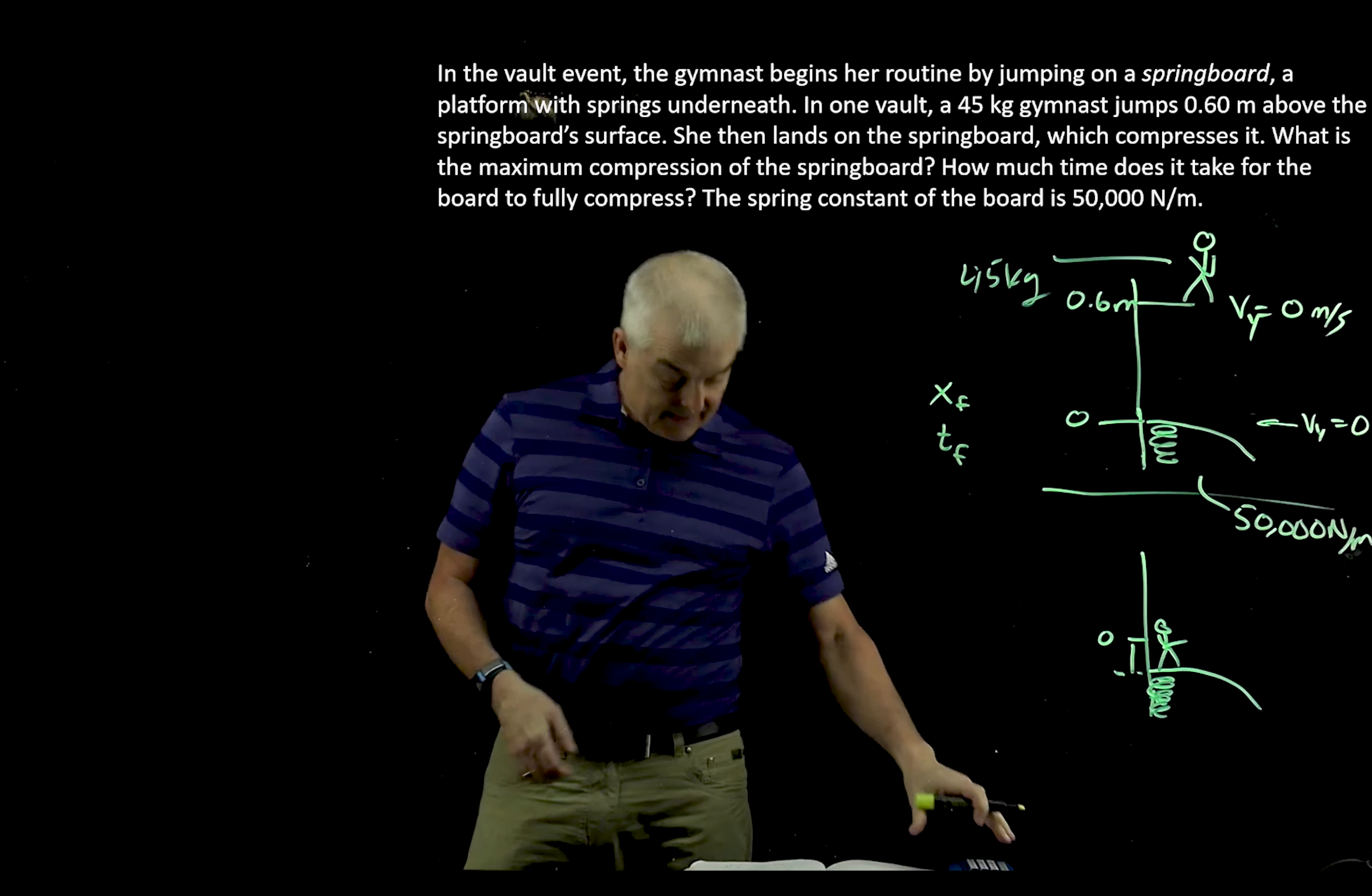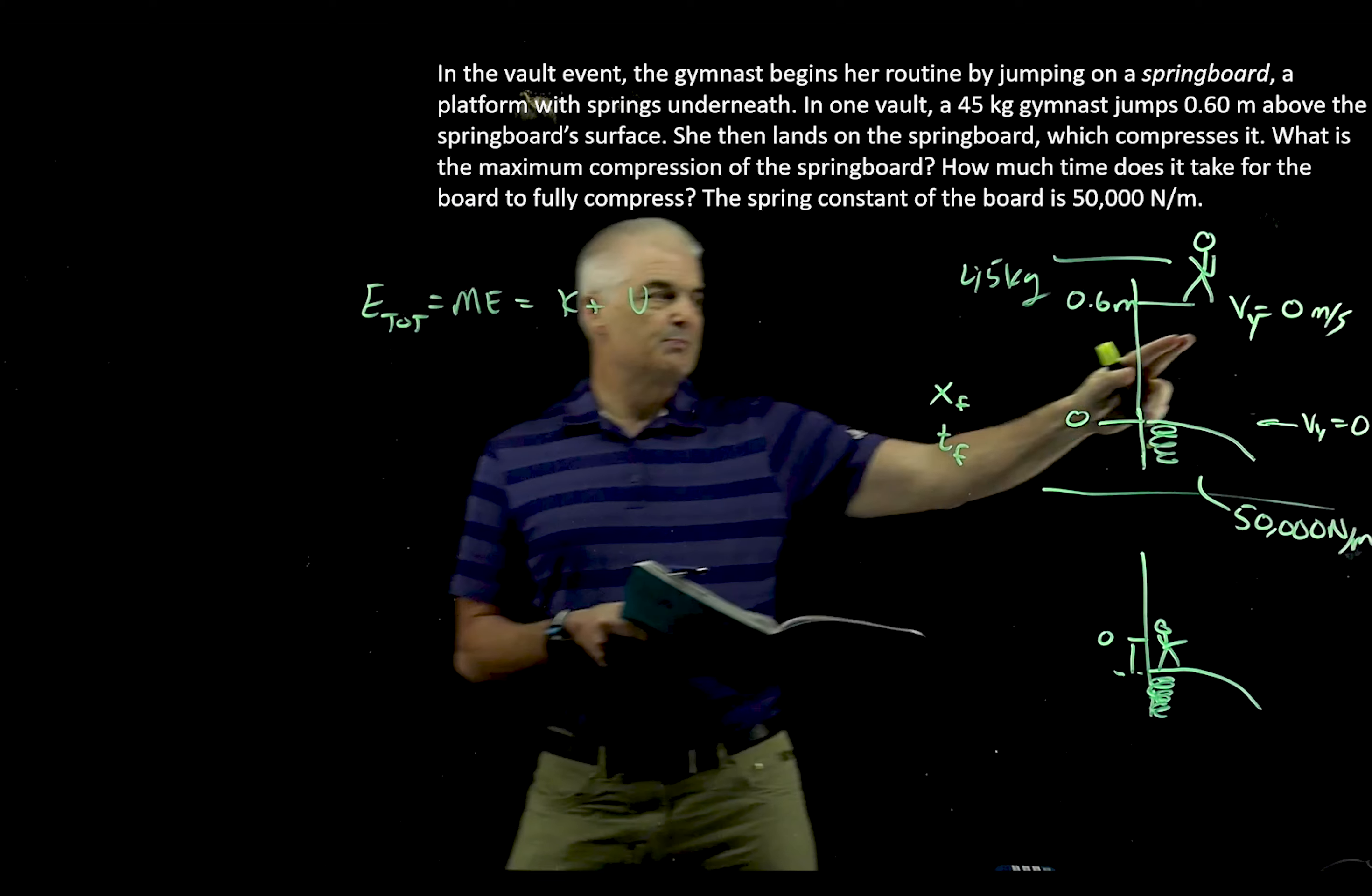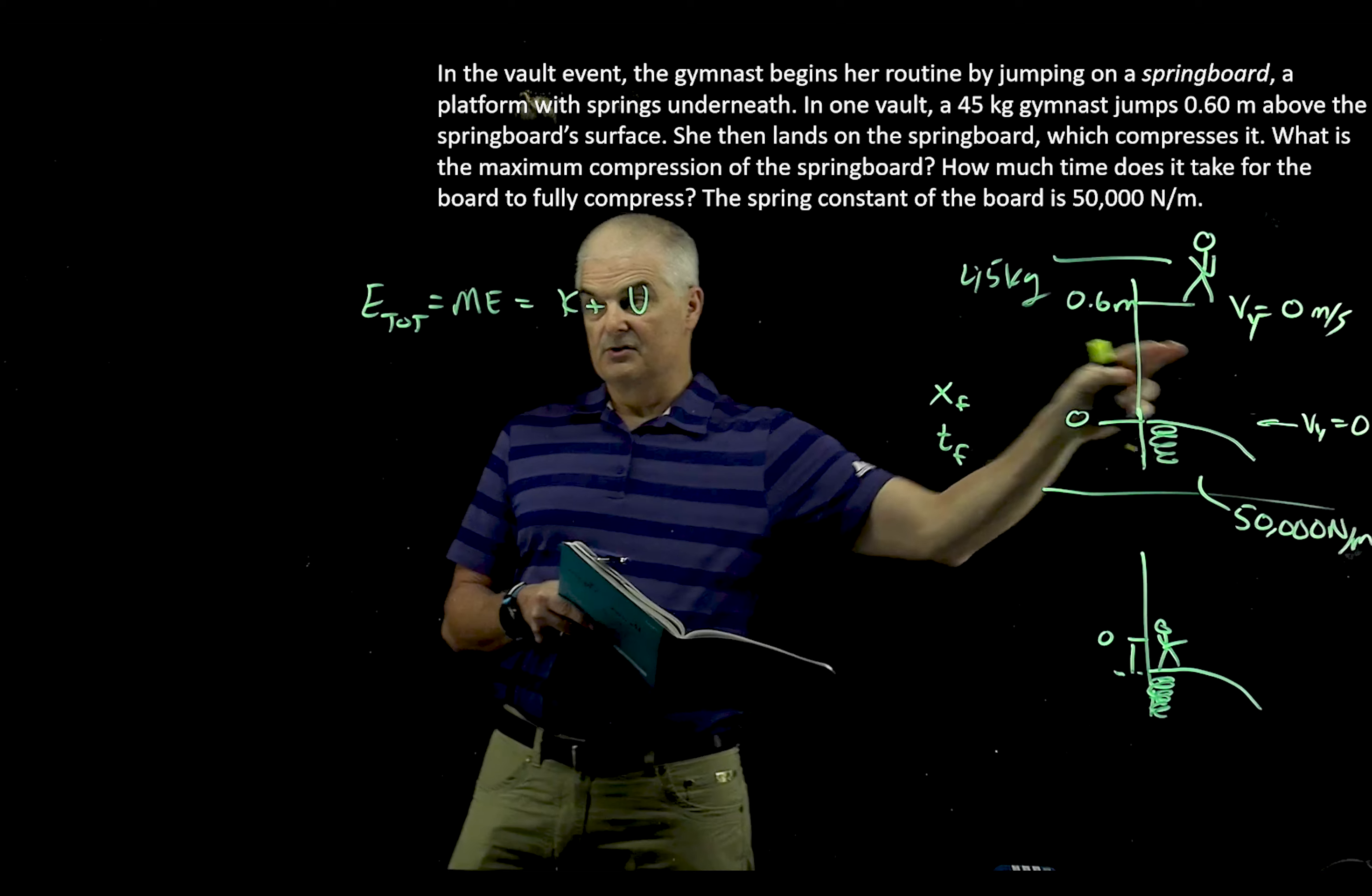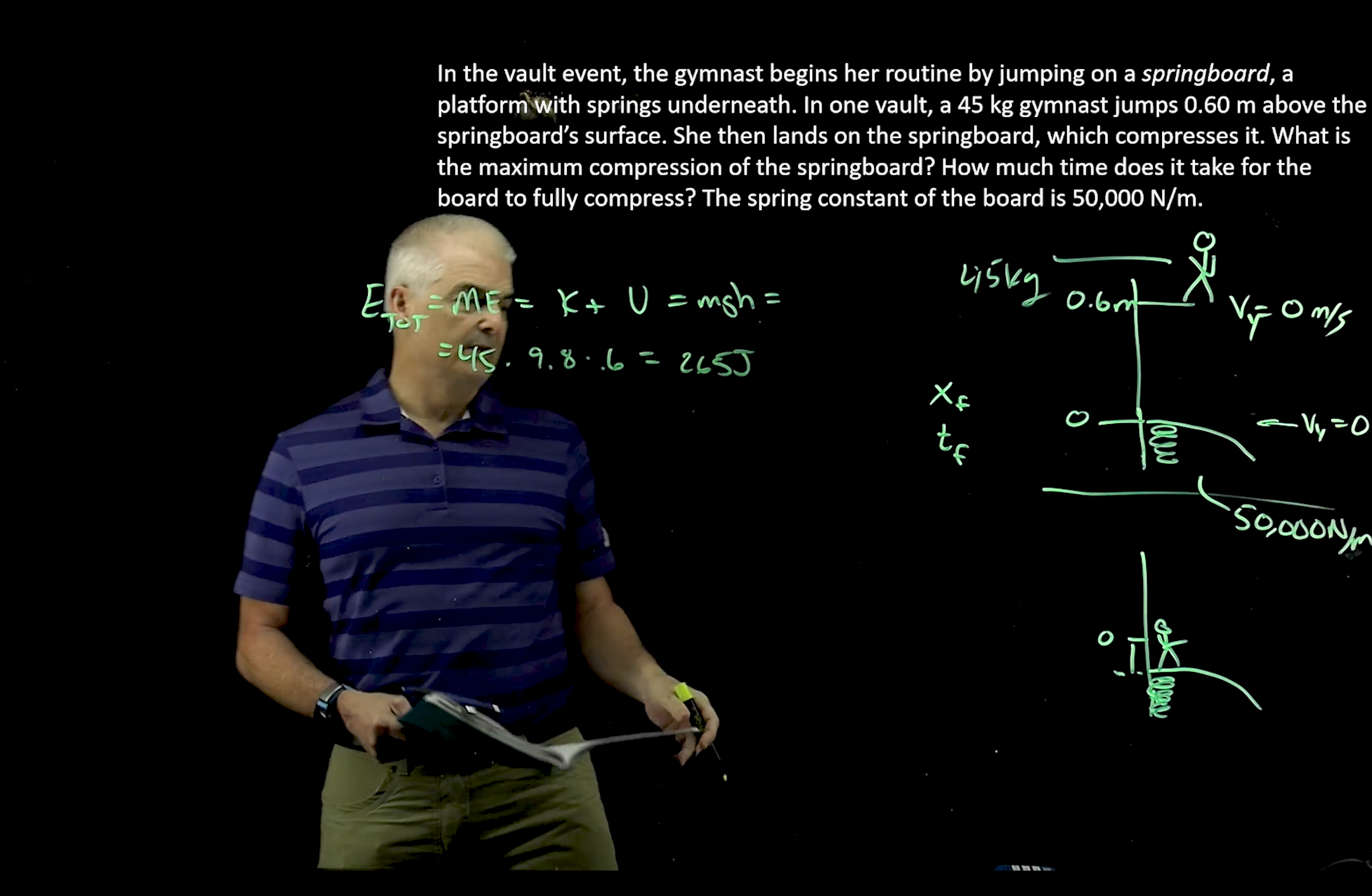So this comes back to essentially an energy question. What I've done is I know my total energy, sometimes called the mechanical energy. What is that equal to? It's equal to the kinetic plus the potential. But at this point, at the very top, if you think about it, she has no kinetic energy. She's moving at zero meters per second. Kinetic energy is one half mV squared. So all she has is potential energy, gravitational potential energy. So the total energy is equal to MGH at the top. MGH equals 45 times 9.8 times 0.6, and I get a total of 265 joules. That's my total energy.